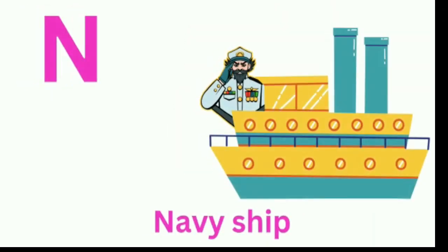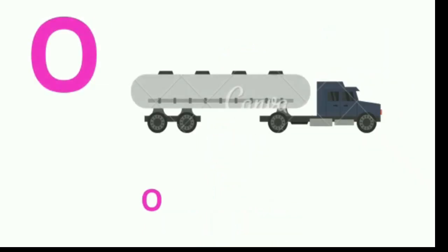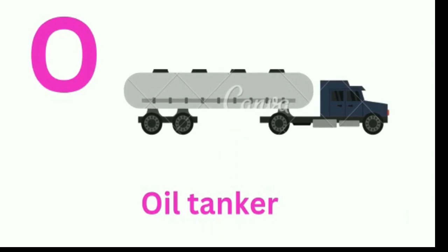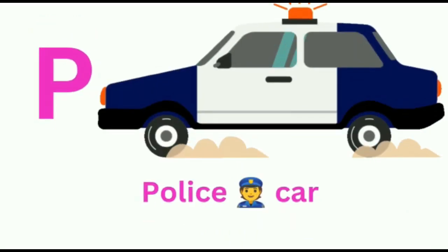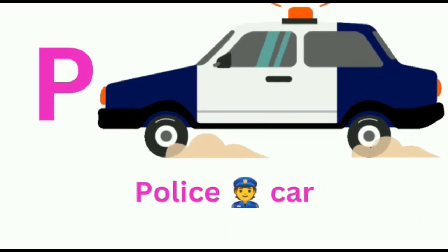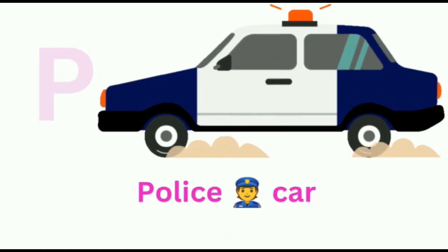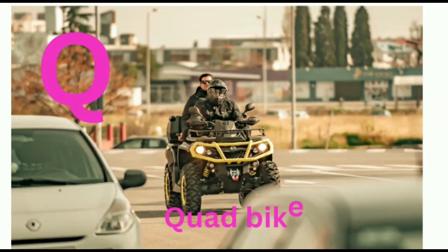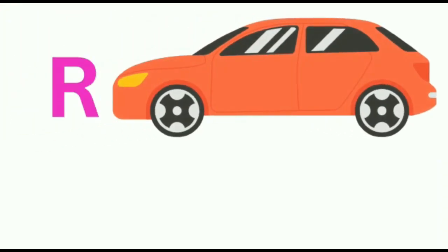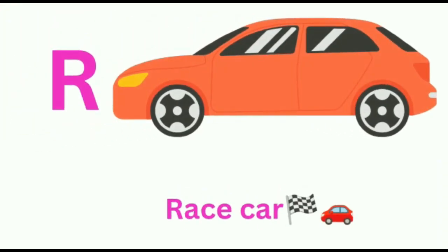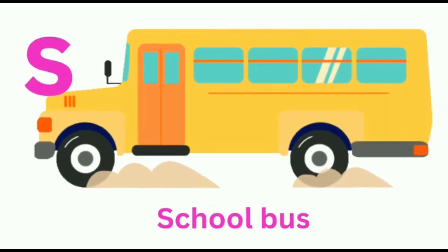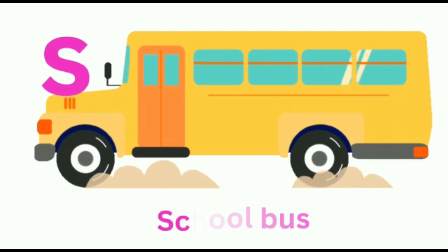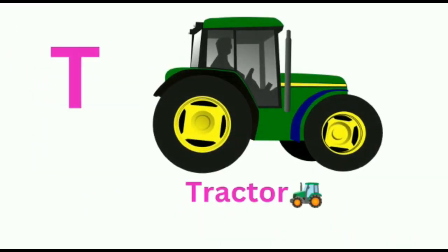N for navy ship. O for oil tanker. P for police car. Q for quad bike. R for race car. S for school bus. T for tractor.